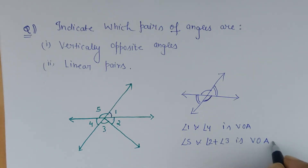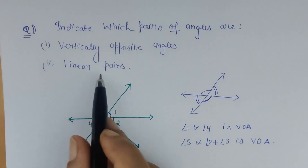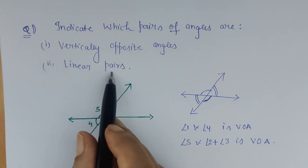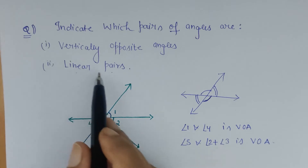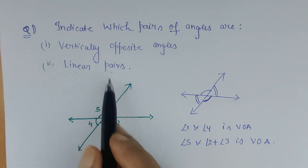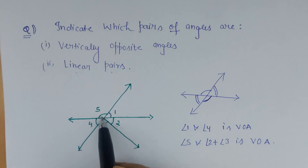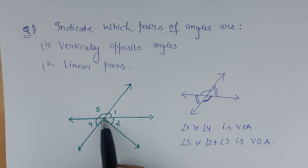Now the next thing is linear pairs. Pair means two, and linear means 180 degrees. So the sum of which two angles forms 180 degrees in this figure? If it is a straight line, as per the property, these are the two angles sharing one common vertex.